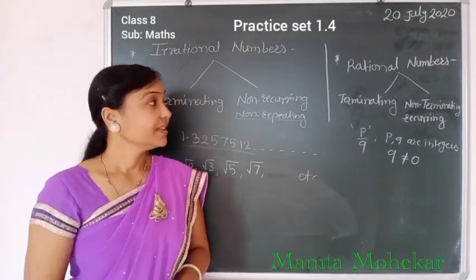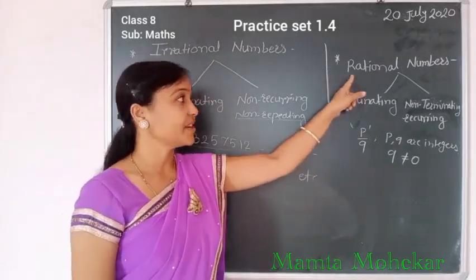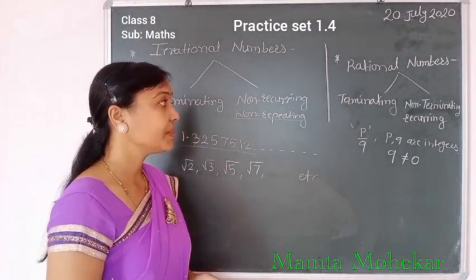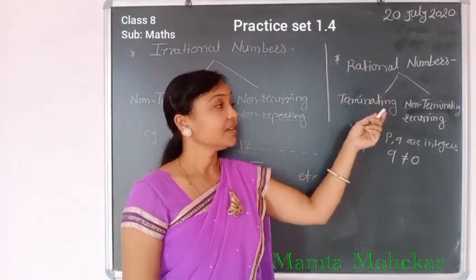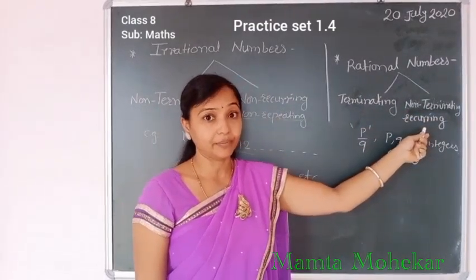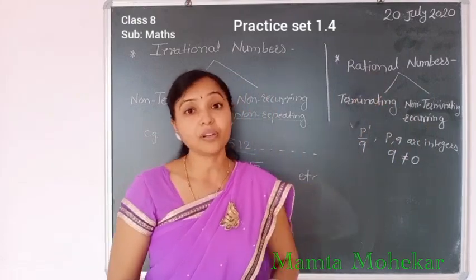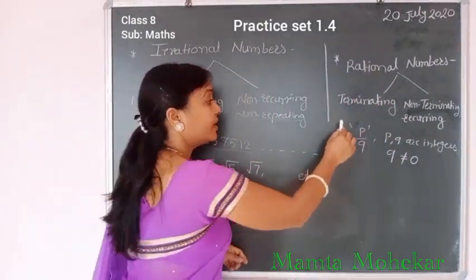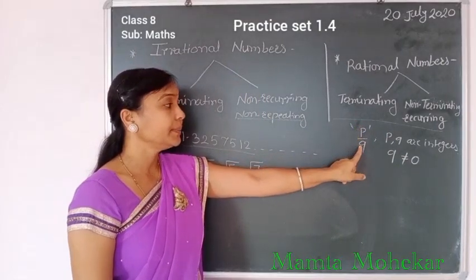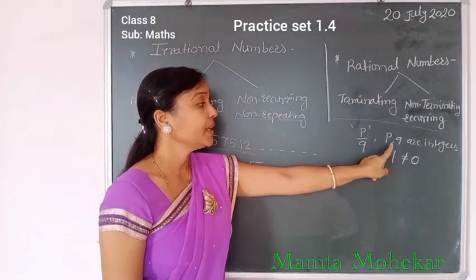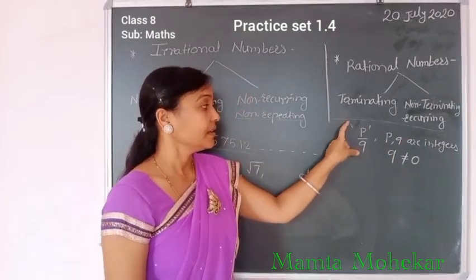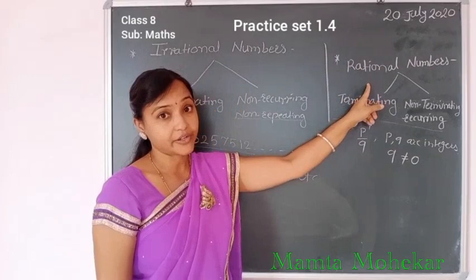Good morning students. In the previous video we saw rational numbers, so we again revise these rational numbers. What is meant by rational numbers? The numbers which are terminating and non-terminating recurring form are called rational numbers. Another definition: a rational number is a number formed as p over q, where p and q are any integers and q is not equal to 0.